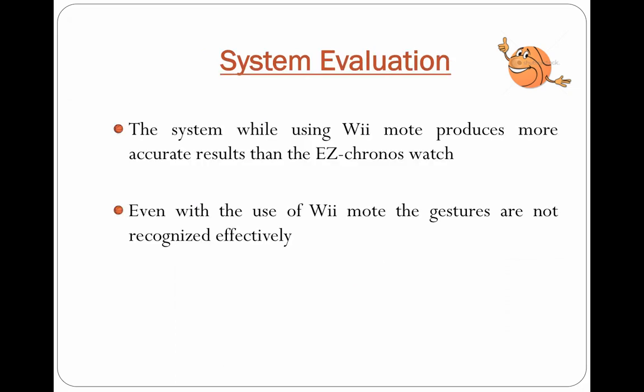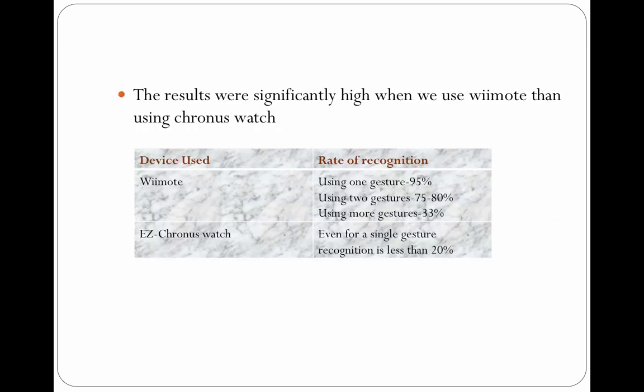Coming to the system evaluation, the system produces an accurate result when implemented with the VMODE compared to the easychronous. Even by using the VMODE, the gestures are not recognized effectively. While comparing the VMODE and the easychronous, the rate of recognition for one gesture is 95% and a continuous decrease of 33% for more than one gesture. In the case of the easychronous, the rate of recognition is less than 20%.